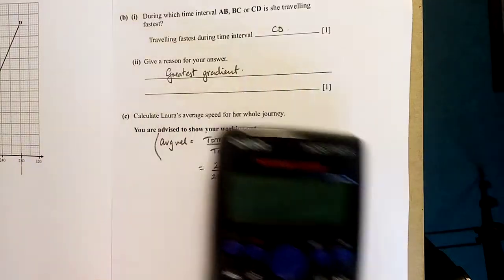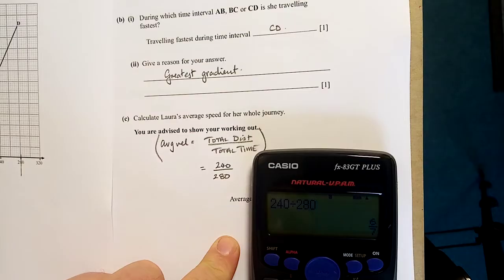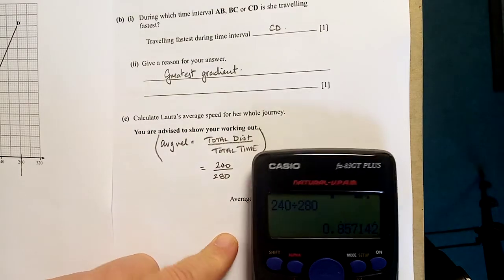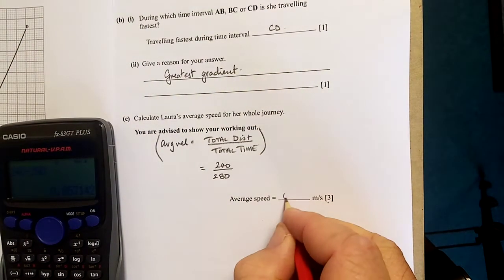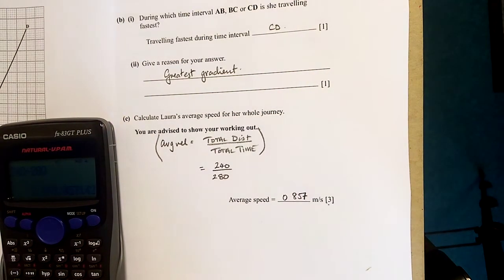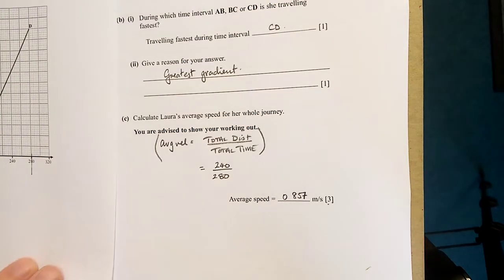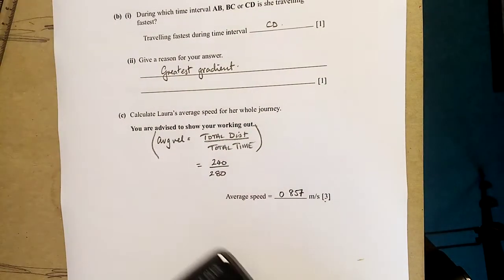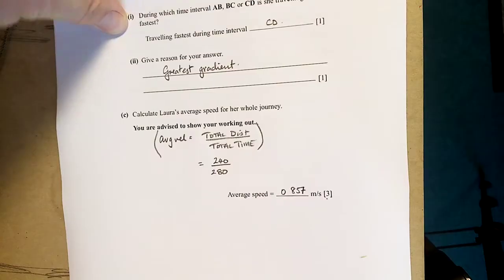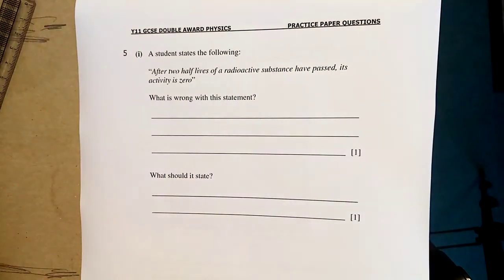240 divided by 280. 0.857 meters per second. I wouldn't accept a fraction. Do it rightly. You can put in the decimal you want. It's meters per second or around that value. Somewhere around with that.